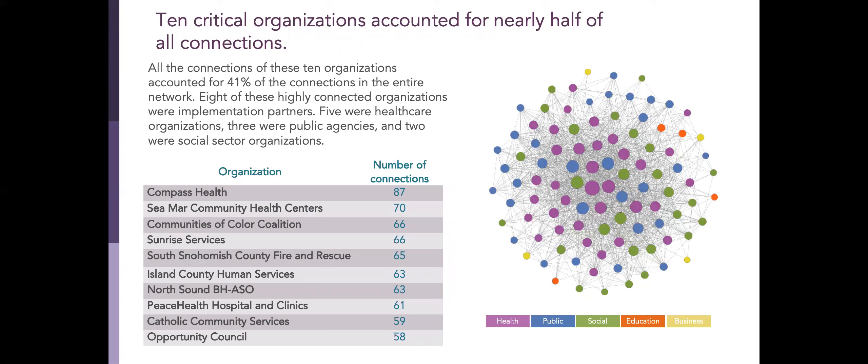When looking at specific organizations, we found that there were 10 critical organizations that accounted for nearly half of all connections. These organizations are highlighted here. As you can see, eight of the 10 organizations were implementation partners with North Sound ACH — five represent healthcare organizations, three public agencies, and two social sector organizations.